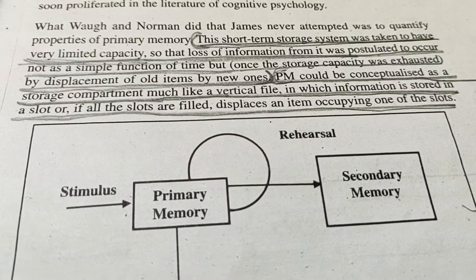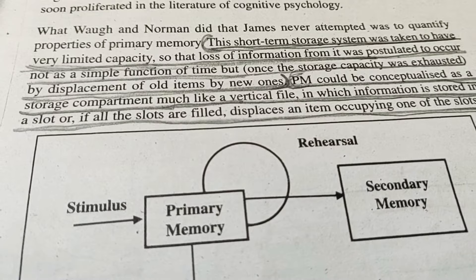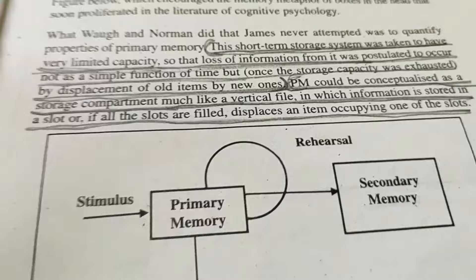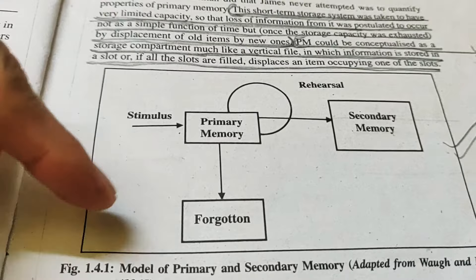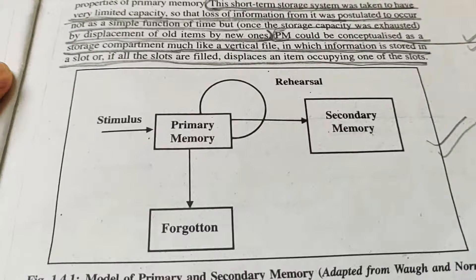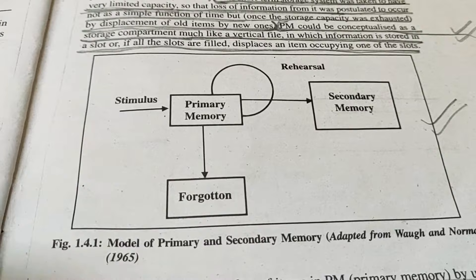The information that is lost over time is not lost due to decay, but because old information displaces new information. If you have a small primary memory storage compartment — like a vertical file with slots — many pieces of information fill those slots. When the slots are full, new information pushes out old information from above to below. They experimented and proved that primary memory loss is not due to time passing, but due to new information causing interference because the capacity becomes full.